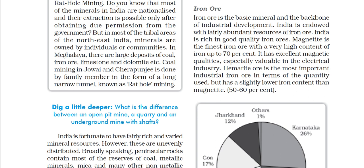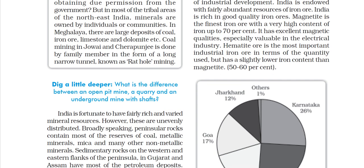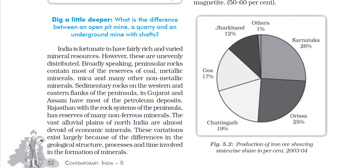Hematite ore is the most important industrial iron ore in terms of quantity used. But it has a slightly lower iron content than magnetite — in hematite it is 50% to 60%. We can see the production of iron ore showing the state-wise share and percentage from the survey of 2003–2004.